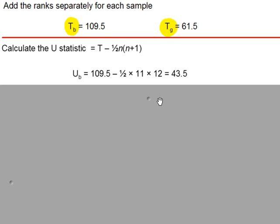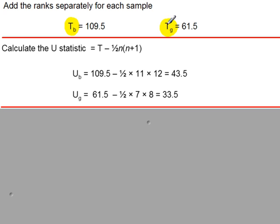Calculate the U-value for each of the samples. Here's the formula, it's given to you in the formula book so you don't need to memorize this. The T is the total, the n is the sample size. So for the boys the total T is 109.5, times n there are 11 data values for the boys, times n plus 1 which is 12, and that gives you a U-value for the boys of 43.5.